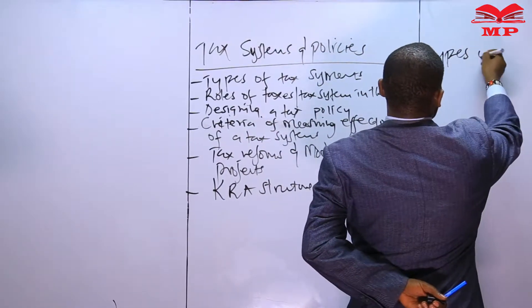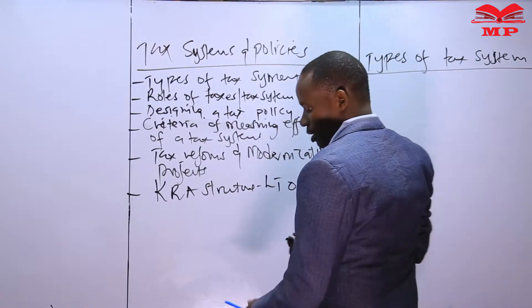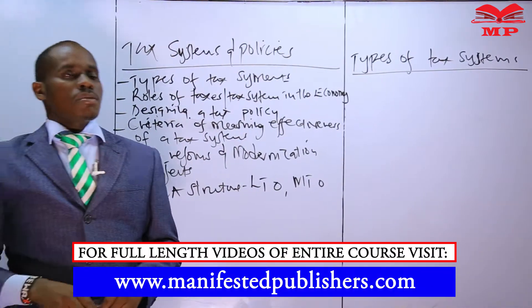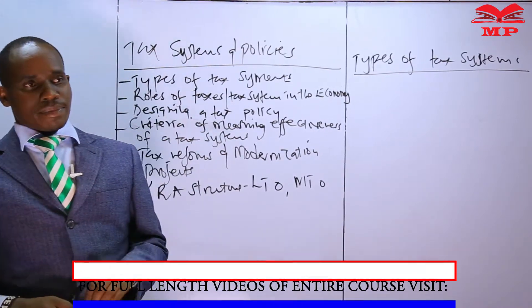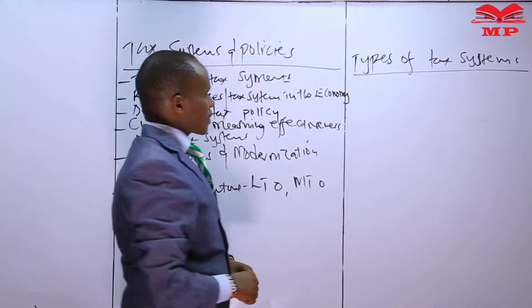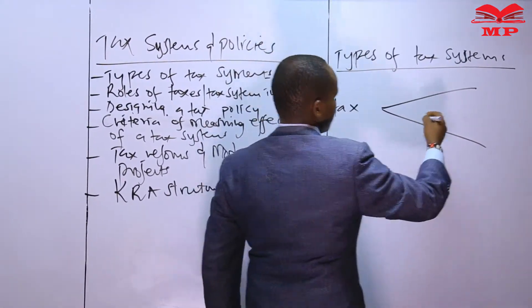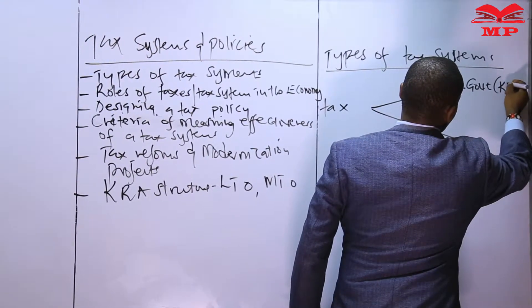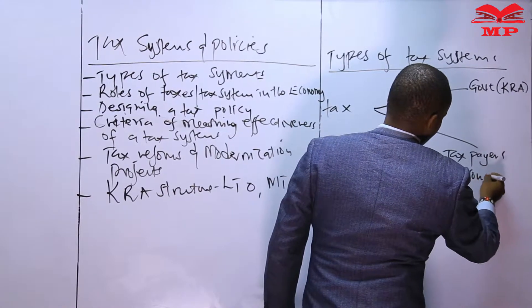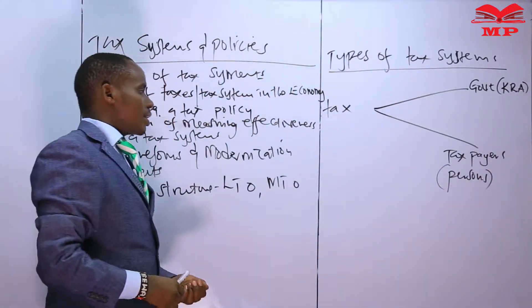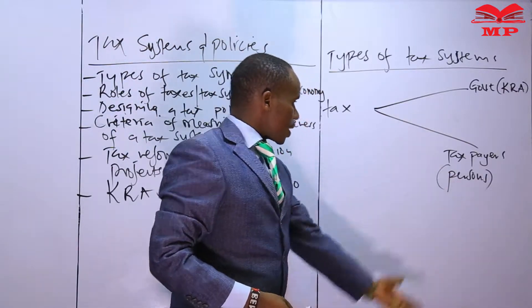Today we are looking at types of tax systems. Before we move to the types of tax system, we need to ask ourselves: what is a tax system? We can define it simply. I can have tax here, government or KRA here, and taxpayers or persons here. I'll start by defining tax, then come to tax system. Tax can simply be defined as an amount paid by taxpayers to the government.